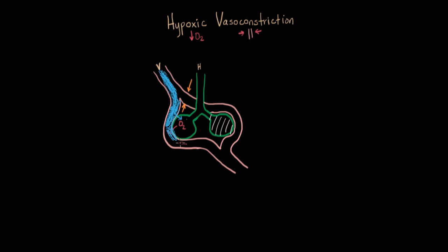Assuming the other airway is still nice and open, blood picks up oxygen, becomes red, and flows out. On the blocked side, some blood still gets through — it's not closed off completely — but significantly less, because there's higher pressure and blood wants to go the path of lowest resistance. This actually maximizes the amount of oxygen we can still deliver because we've shunted more blood to the side that works better. The output might be slightly purplish due to some mixing, but it's still mostly red.